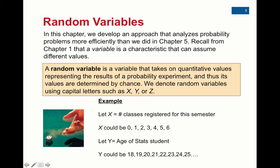Another example would be let Y equal the age of a stat student at CCD. So Y could be anything from 18, 19, 20, 21, 22, 23, 24, 25, et cetera, going on up. So any individual student is a random variable because before I collect that information, I don't know what their age is, but I do know what it possibly could be.